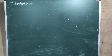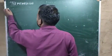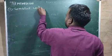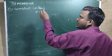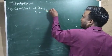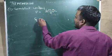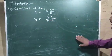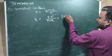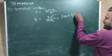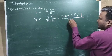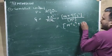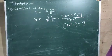Number 11 is gravitational constant. According to Newton's law of gravitation, F = G M₁ M₂ / R². From here, G = F R² / (M₁ M₂). The dimensional formula for force is M L T⁻² and for length is L. So the dimensional formula for gravitational constant is M⁻¹ L³ T⁻².